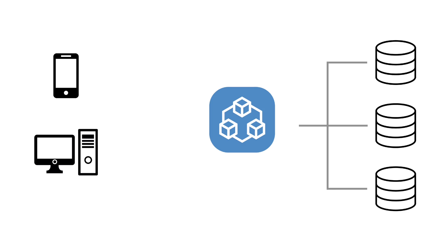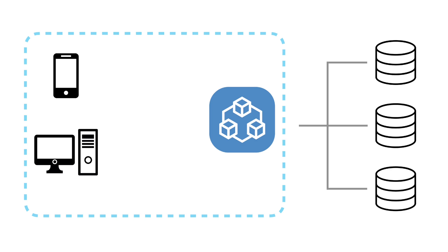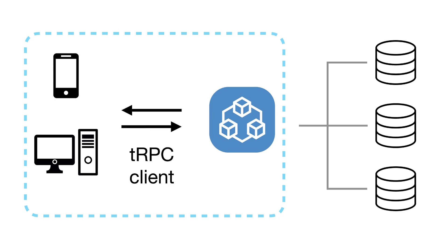tRPC, on the other hand, is a set of libraries to help you build end-to-end type safe APIs using TypeScript. It consists of two major libraries. The first one is a tRPC server, in which you define your API schema and all the possible type definitions, including the resolvers — or at least the functions — to get the data out of your data sources. The other library is a tRPC client, which helps your frontend projects to consume the data from your tRPC server.